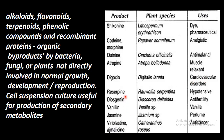Reserpine is used as an anti-hypertensive to lower blood pressure. Secondary metabolites are also used in anti-fertility drugs, perfumes, and anti-cancer drugs. All of these are prepared from secondary metabolites.